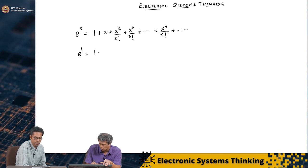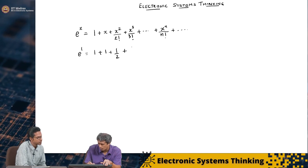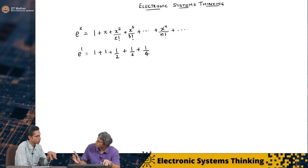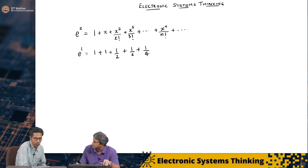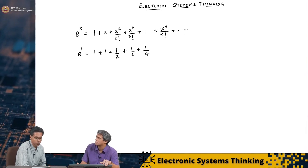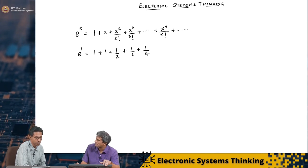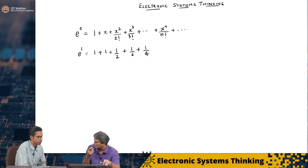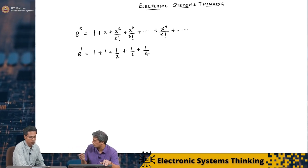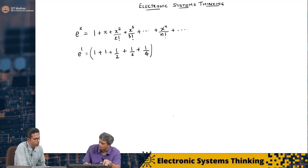We have seen earlier based on something known as a Taylor series, it is possible to expand e power x as 1 plus x plus x squared by 2 factorial plus x cubed by 3 factorial plus, so on, x power n by n factorial all the way up to infinity. I just had to substitute the value of x as 1, e power 1, I simply got 1 plus 1 plus 1 by 2 plus 1 by 6 plus 1 by 24.